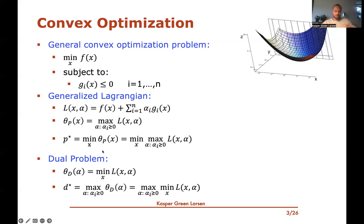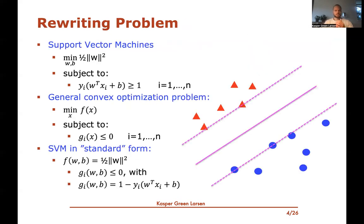We also introduced the dual problem theta_d(alpha), a function that takes a parameter alpha and returns the minimum over x of L(x, alpha). The dual value is the maximum over non-negative alpha of the minimum over x of L(x, alpha) — the reverse order of min and max compared to the primal. We argued that for convex optimization problems the dual value is less than or equal to the primal value. Now we will rewrite the SVM problem into this general convex optimization form.